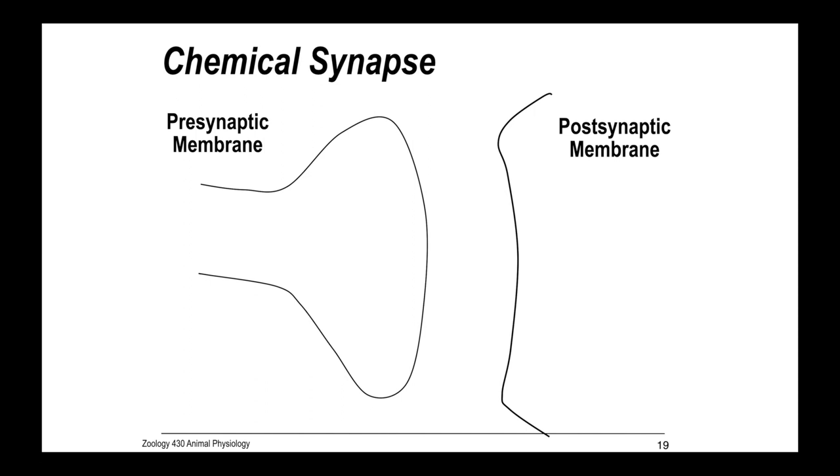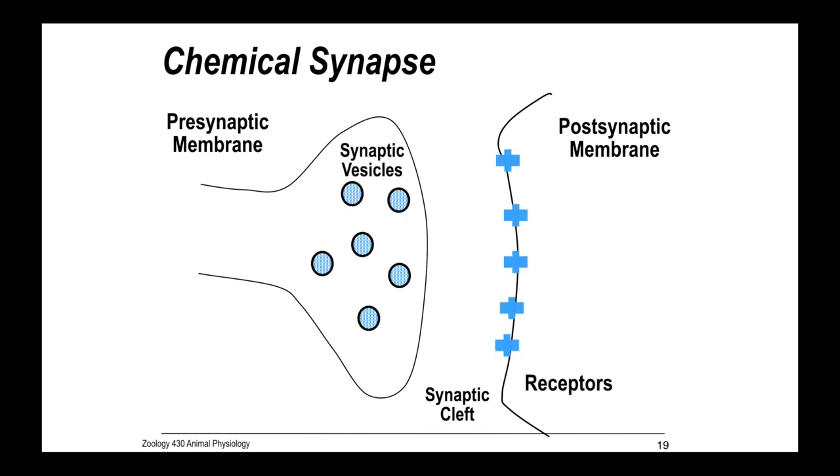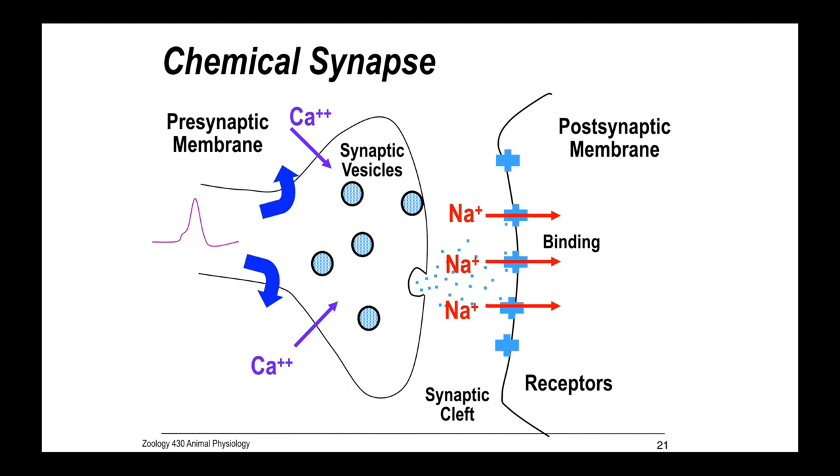A chemical synapse is a bit different. We still have the presynaptic and postsynaptic membrane, but we have a synaptic cleft and synaptic vesicles, receptors on the postsynaptic membrane. When we have that same action potential traveling down the presynaptic axon, we have a depolarization that causes an influx of calcium ions, which then causes the synaptic vesicles to move toward the terminus and release neurotransmitters into the cleft, which bind to the receptors on the postsynaptic membrane, opening the sodium channels, which then depolarize the postsynaptic membrane. These cause excitatory postsynaptic potentials, or EPSPs.